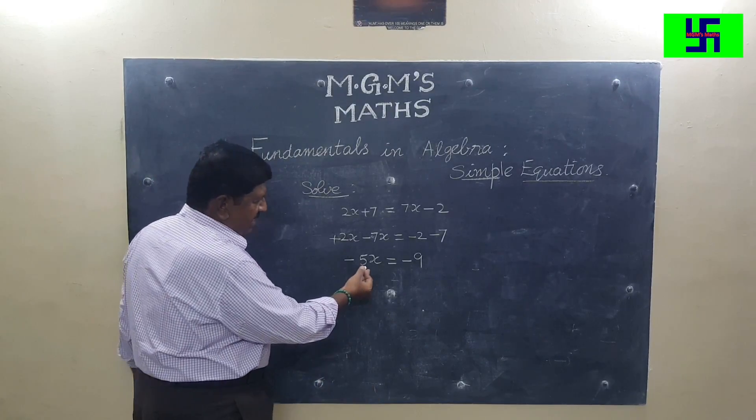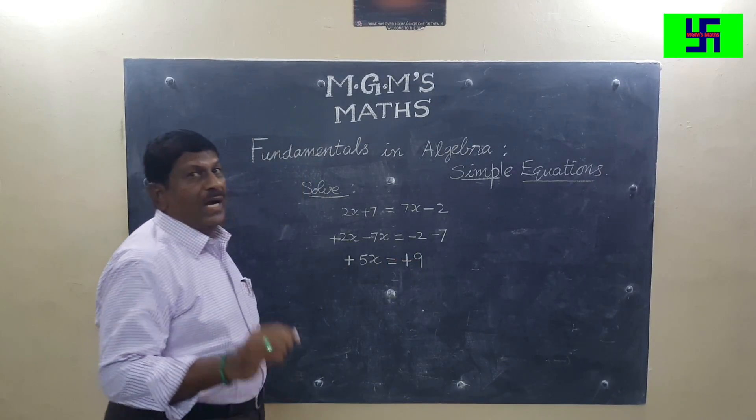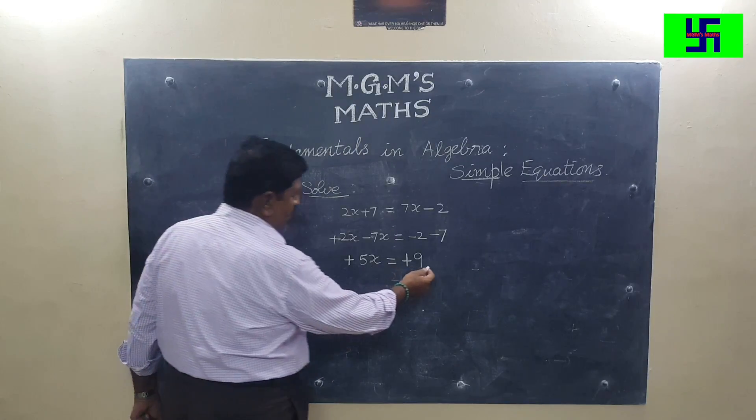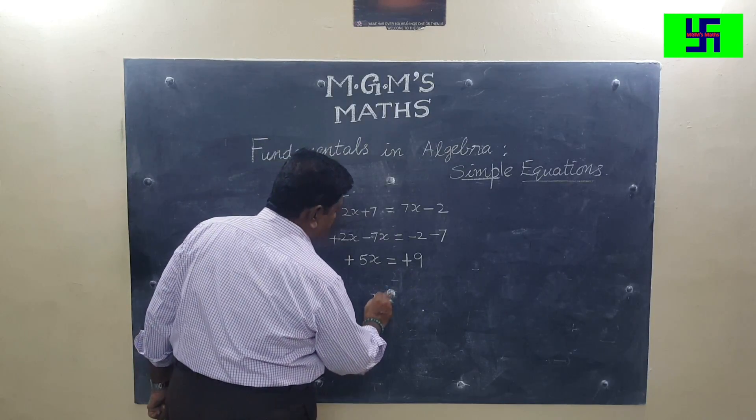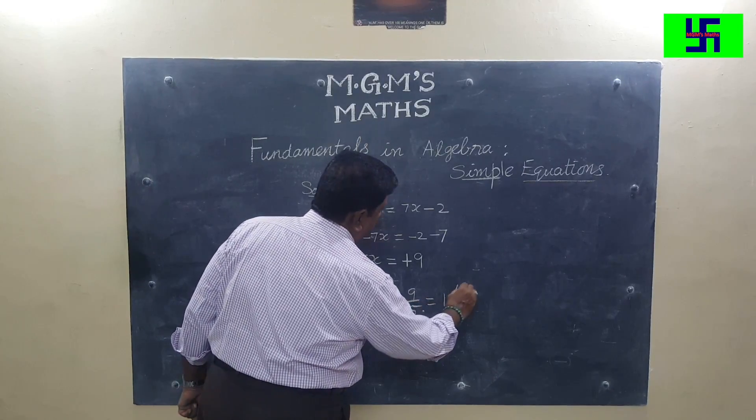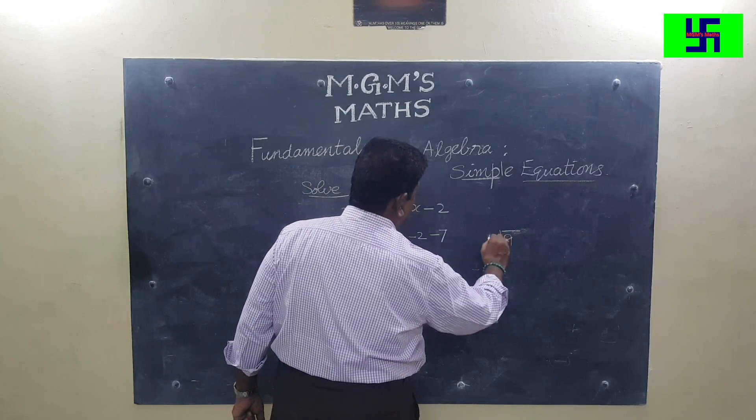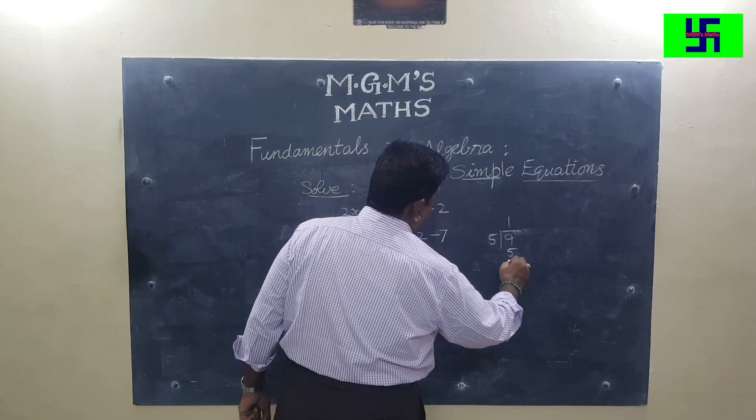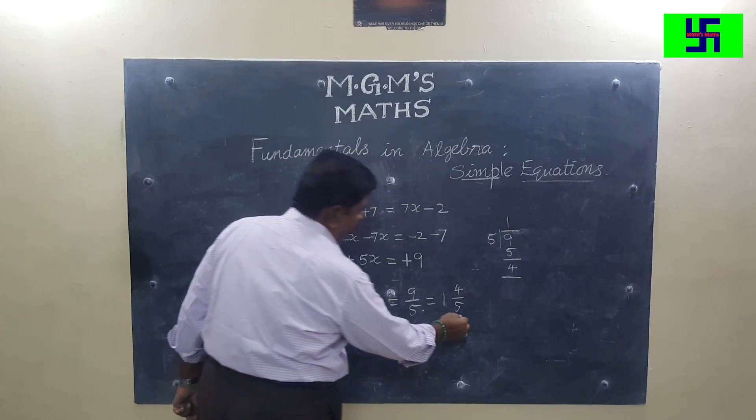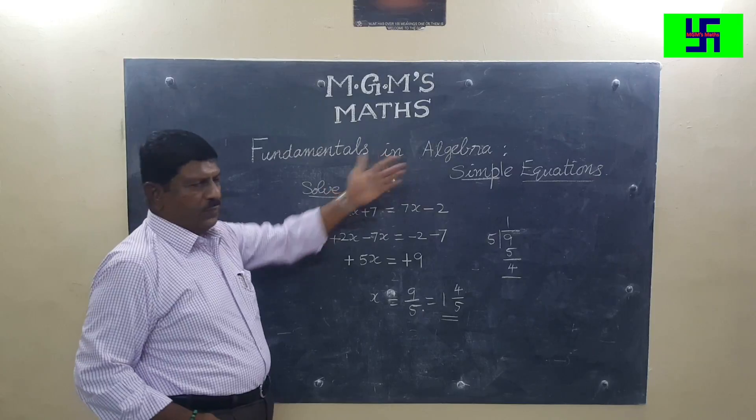Both sides are having minus sign. Both can be removed. It means left hand side we are making it plus, right hand side also plus by multiplying by another minus sign. 5x is equal to 9, so x is equal to 9 upon 5, which is 1 and 4 upon 5. I suppose you have understood addition and subtraction in simple equations.